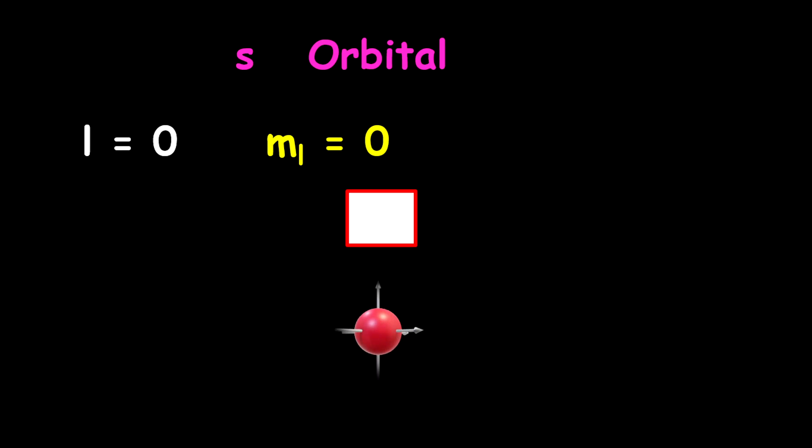Starting with the S orbital, the L value is zero and the ML value is also zero. This is indicating that there is only one single orbital, which is the spherical form, which is a very sharp shape.